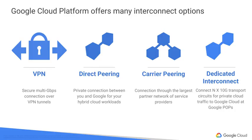Many GCP customers want to interconnect their other networks to their Google VPCs, such as on-premises networks or networks in other clouds. Many customers start with a virtual private network connection over the internet using the IPsec protocol. To make that dynamic, they use a GCP feature called Cloud Router, which lets your other networks and your Google VPC exchange route information over the VPN using the Border Gateway Protocol. For instance, if you add a new subnet to your Google VPC, your on-premises network will automatically get routes to it.